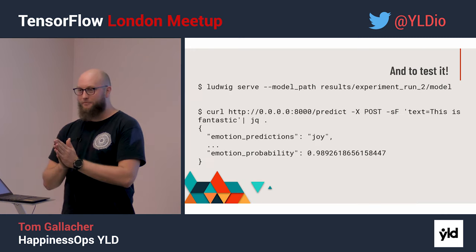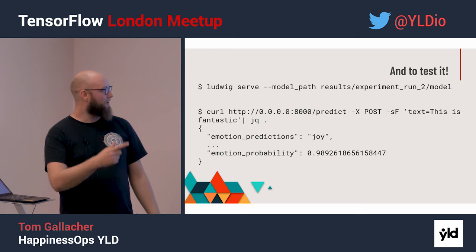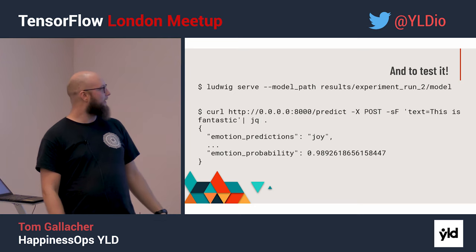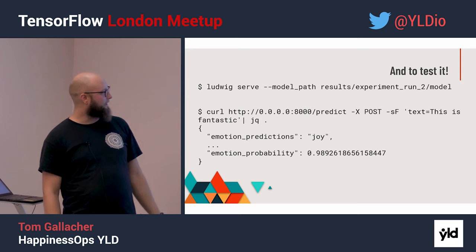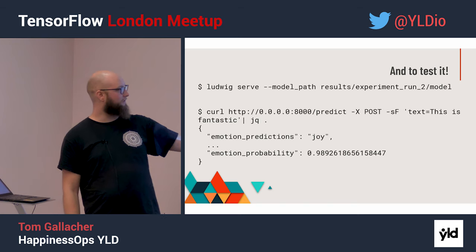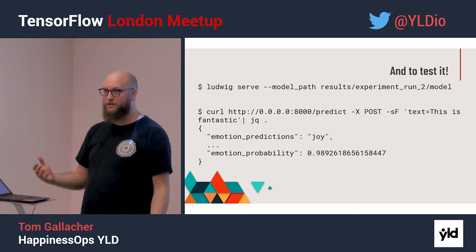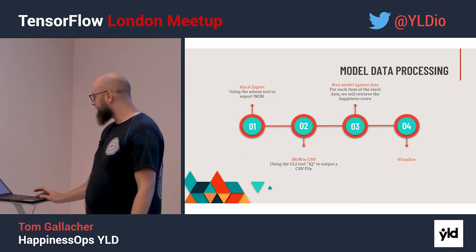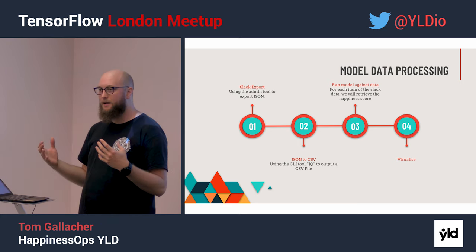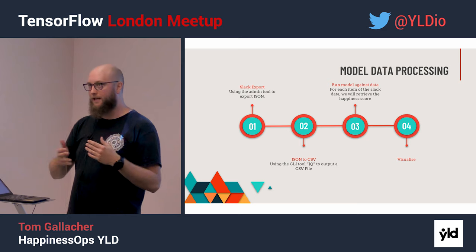Once that was up and running, Ludwig comes with its own built-in HTTP server. I ran that against the model that came out of the experiment — the second run — curled the HTTP endpoint it starts up, and I started getting predictions out. I sent through the text 'This is fantastic' and got a prediction of 98%, 90% accuracy of joy. I was like, this is working, this is nice — I'm actually getting some meaningful data out of it. The next thing was: how do I test this against all of my data and map how emotions in chat are happening over time?